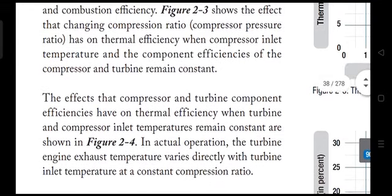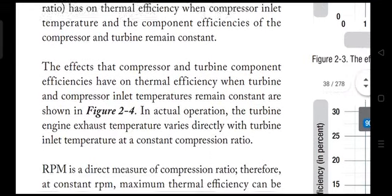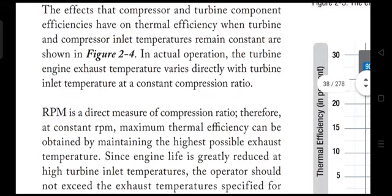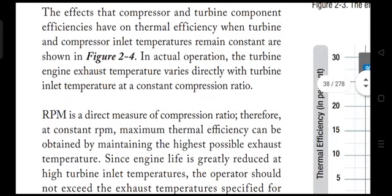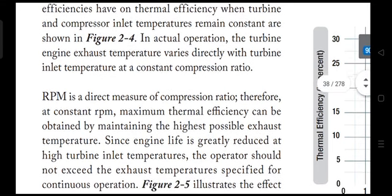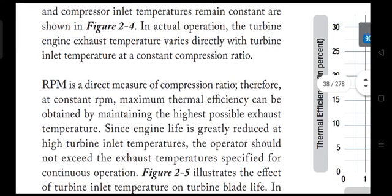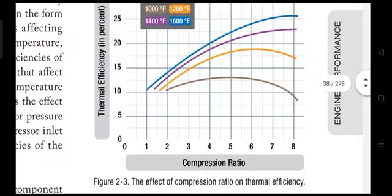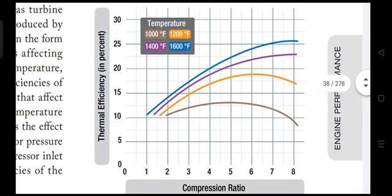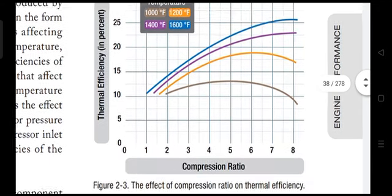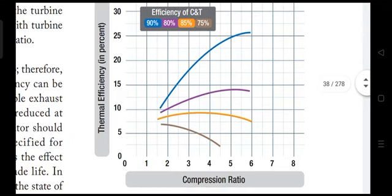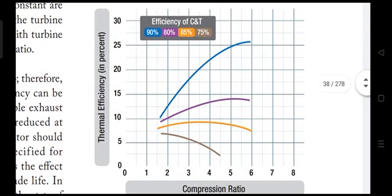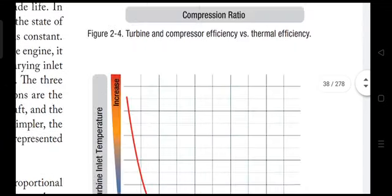Next, we look at the effects that compressor and turbine component efficiency have on thermal efficiency when turbine and compressor inlet temperatures remain constant. These graphs show how thermal efficiency varies with compression ratio and with the efficiencies of the compressor and turbine.